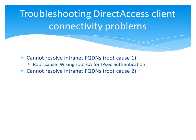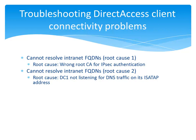In the second problem, Direct Access again cannot resolve intranet FQDNs. In this case, DC1, the intranet DNS server, was misconfigured to not listen for DNS traffic on its ISATAP address.